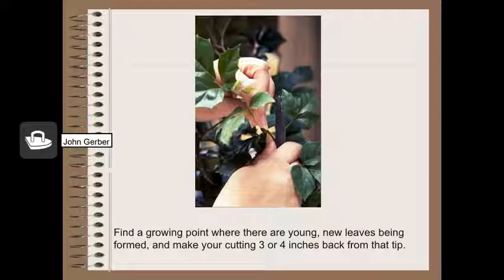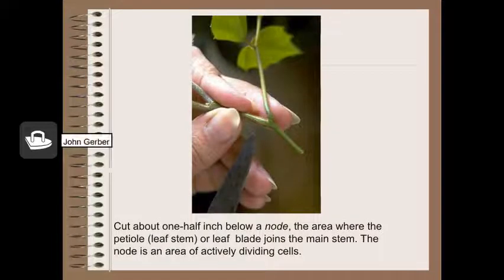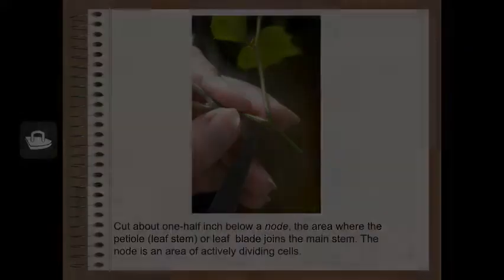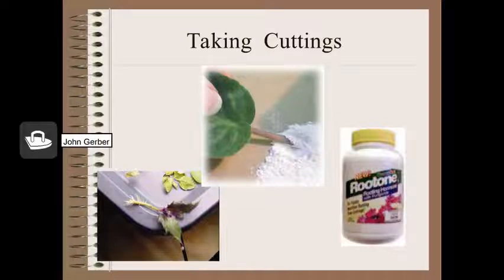Remember that hardwood stems don't root very well — stick with soft herbaceous stems first. Make a clean cut slightly below where the node is; that's where the petiole and the stem are connected. Push the cutting into the vermiculite and try to keep the leaves from touching the vermiculite so they don't rot. Rootone, or another material called Hormodin, are common products used to root cuttings. There's an auxin that is put on the cut end and causes roots to be stimulated to grow.